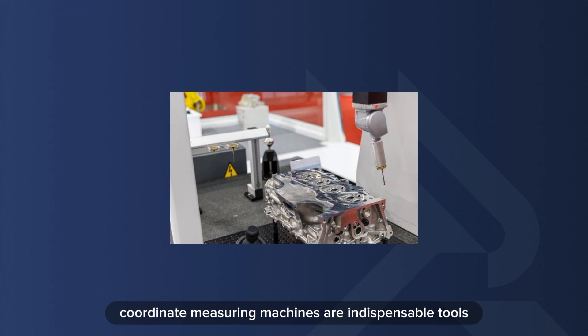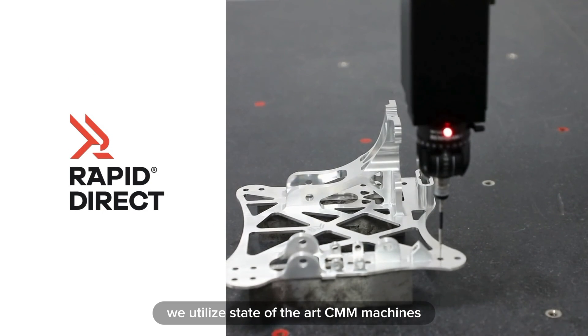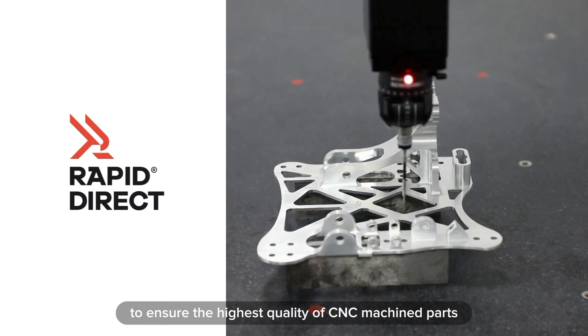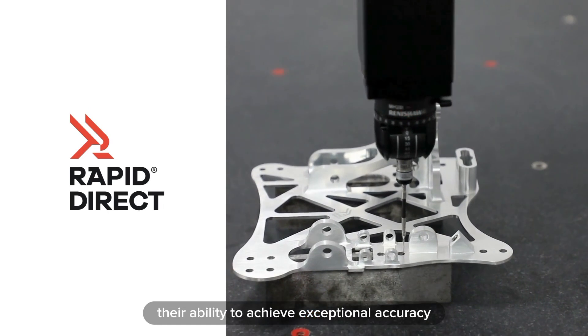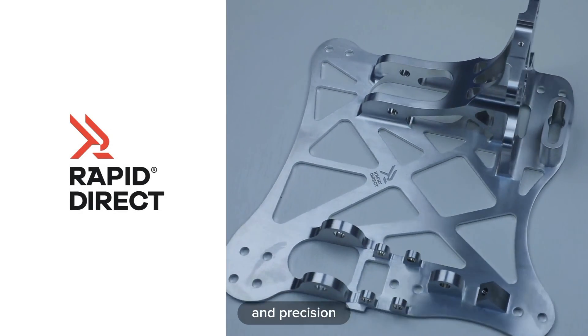Coordinate measuring machines are indispensable tools in precision measurement and quality control within manufacturing industries. At RapidDirect, we utilize state-of-the-art CMM machines to ensure the highest quality of CNC machined parts. Their ability to achieve exceptional accuracy ensures that we exceed your demands for accuracy and precision.